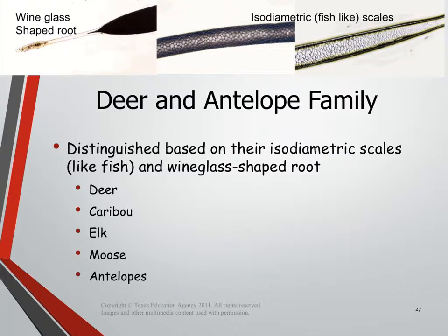The reason we put certain animals into the deer and antelope family is all based on what their scales look like and the shape of their roots. All deer and antelope family animals have what we call isodiametric scales — they look like fish scales, as shown in these two pictures. And they have a wine glass shaped root — it literally looks like the stem of a wine glass. Some animals in this family would include deer, elk, moose, antelope, and caribou.